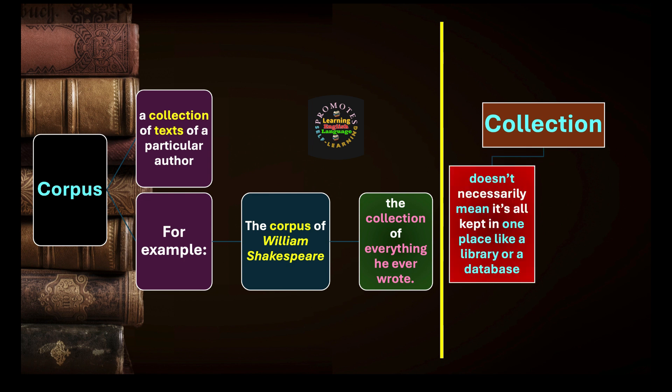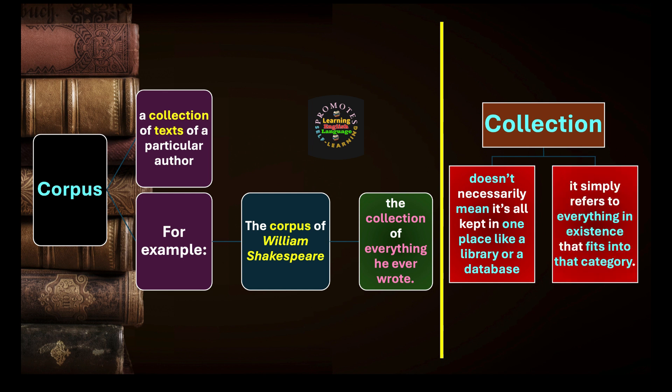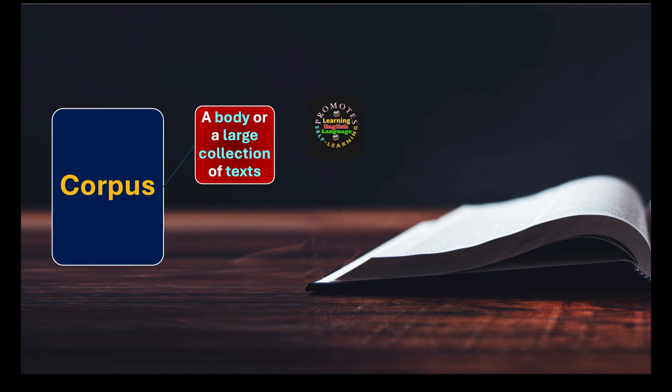There is a difference between corpus and collection. Collection doesn't necessarily mean it's all kept in one place like a library or a database, which corpus does. Collection simply refers to everything in existence that fits into a particular category, while corpus is kept in one place — a large database.